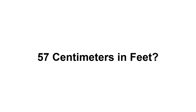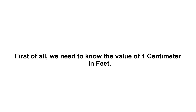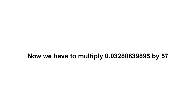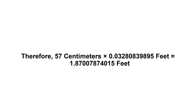57 centimeters in feet. First of all, we need to know the value of one centimeter in feet. One centimeter equals 0.03280839895 feet. Now we have to multiply 0.03280839895 by 57. Therefore, 57 centimeters times 0.03280839895 feet equals...